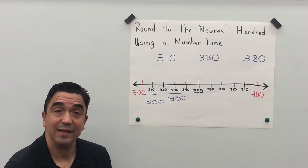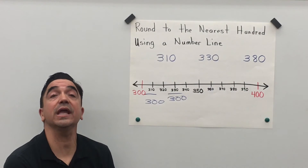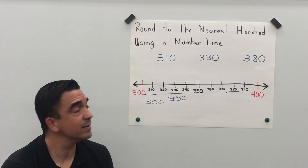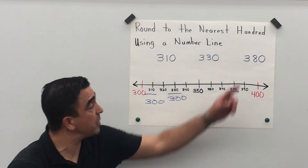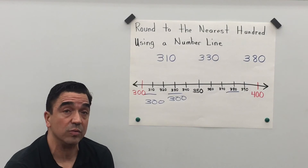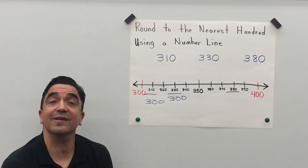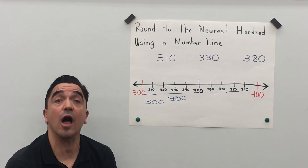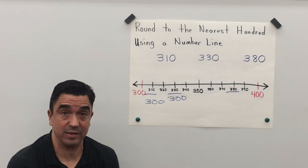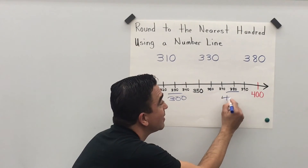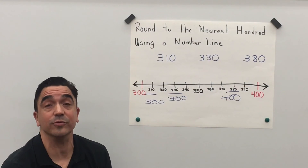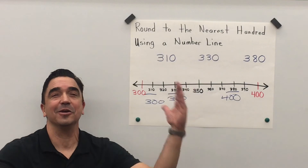Now let's look at our last number: three hundred eighty. Once again, I'm going to look at the tens place — that number is going to tell the number in the hundreds place what to do. The number in the tens place is an eight, so it's going to tell the three in the hundreds place to go up. When we round three hundred eighty to the nearest hundred, we get four hundred, which is closer to four hundred. And that concludes our lesson.